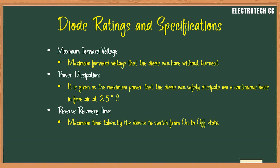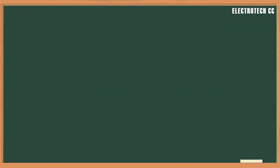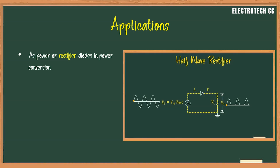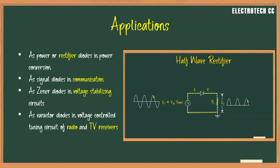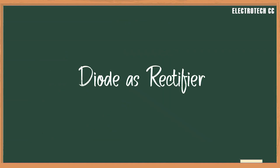The main applications of semiconductor diodes are: as power or rectifier diodes, which convert AC current into DC current for DC power supply of electrical circuits; as signal diodes in communication circuits for modulation and demodulation of small signals; Zener diodes used in voltage stabilization circuits; varactor diodes used in voltage-controlled tuning circuits in radio and TV receivers; and many diodes are used in logic circuits in computers. In this video we discussed the basic concepts of the diode. In the next video we will discuss the rectifier circuit using diodes. Thank you.